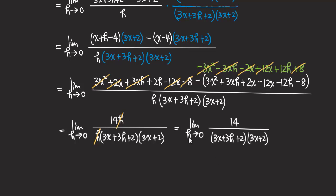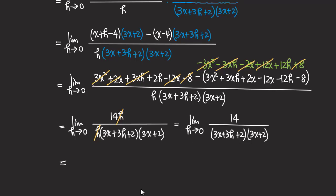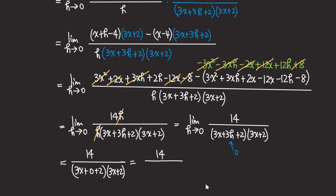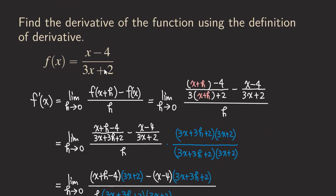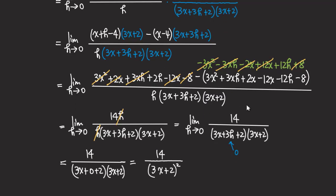We can directly substitute zero into h. Plugging zero into h gives us 14 over three x plus zero plus two, times three x plus two — that's 14 over three x plus two, times three x plus two. There are two factors of three x plus two, so we get 14 over the quantity three x plus two, squared. And that would be the derivative for this function. It's a lot of tedious calculation, but that's how we do it. Thank you for watching — please share this video and subscribe to my channel. See you next time.